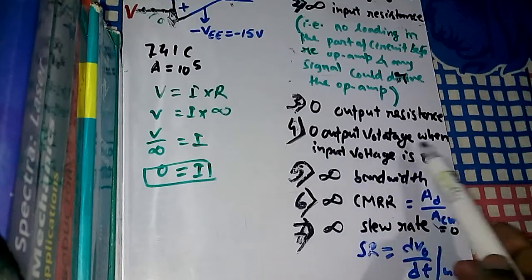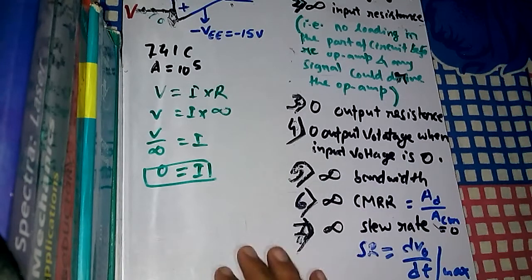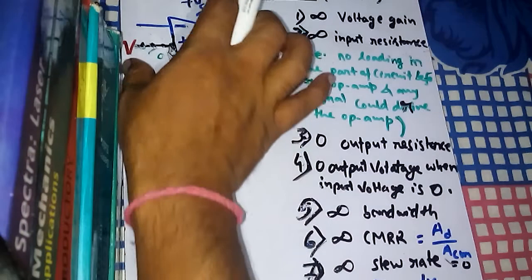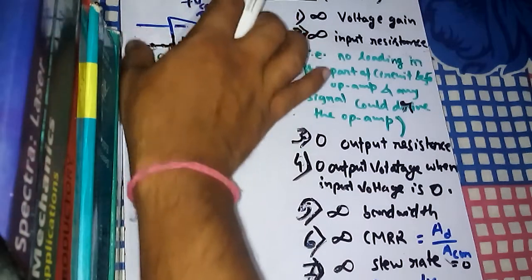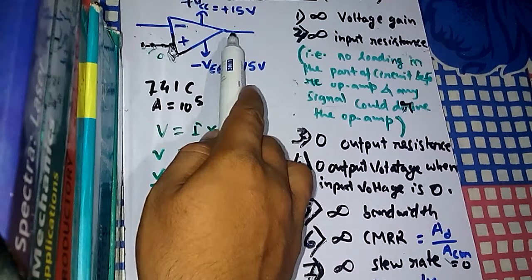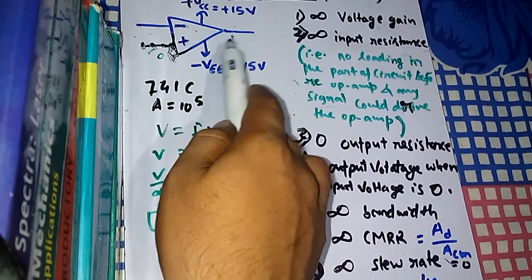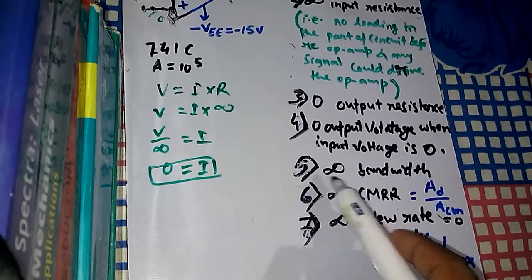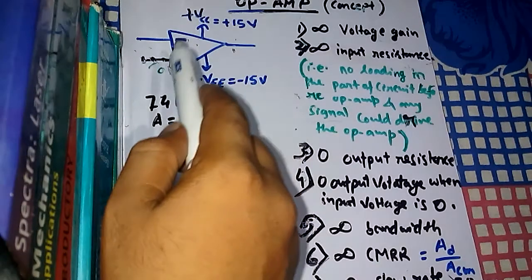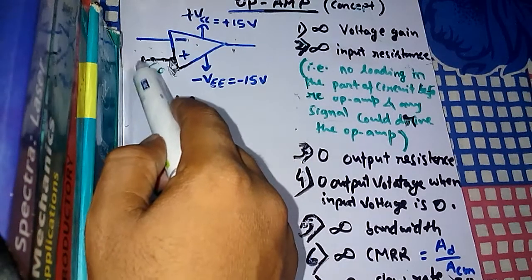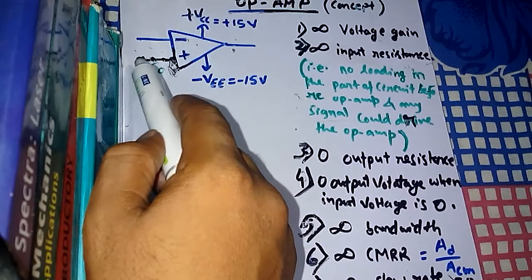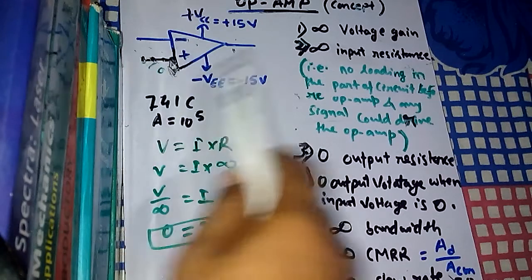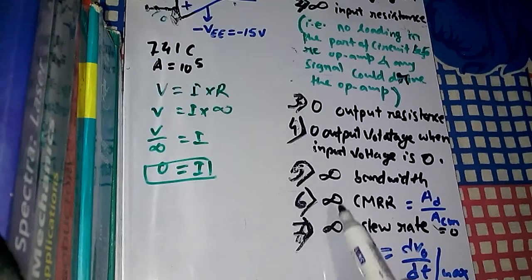The fourth characteristic is zero output voltage when input voltage is zero, also called zero output offset voltage. If there is no input, the output should also be zero — if there is output with no input, that is noise. The fifth characteristic is infinite bandwidth, meaning the op-amp should amplify signals of any frequency from zero hertz to infinite hertz.